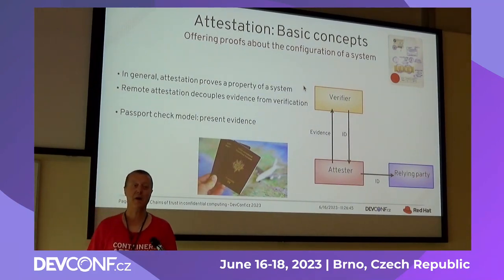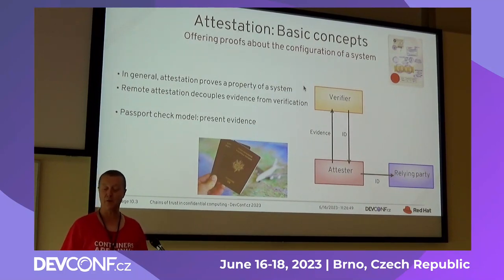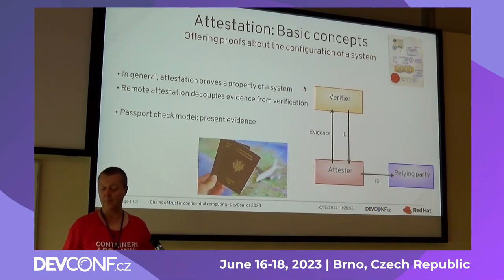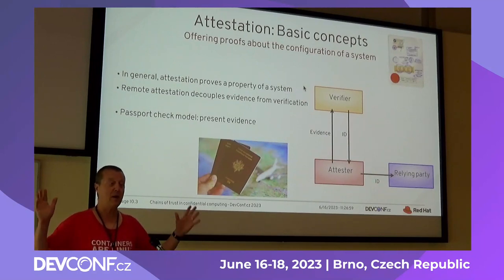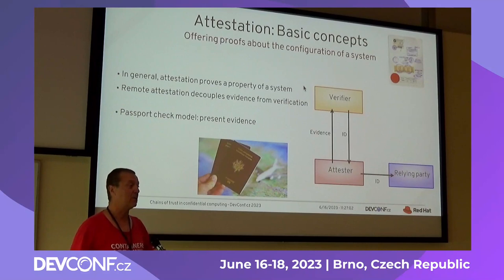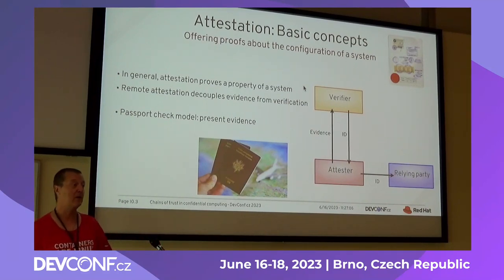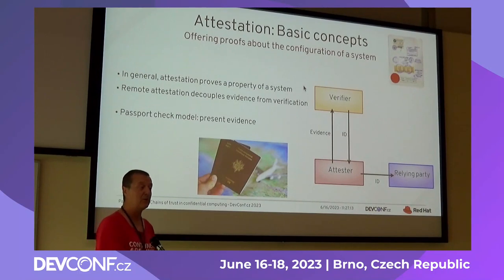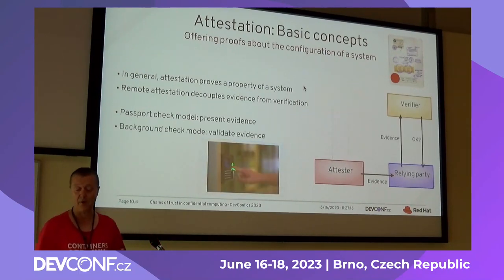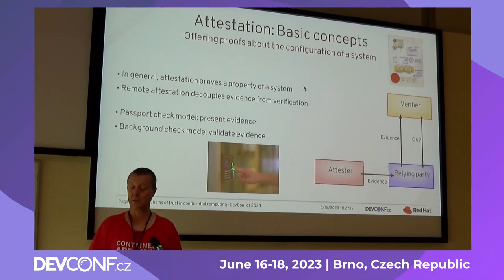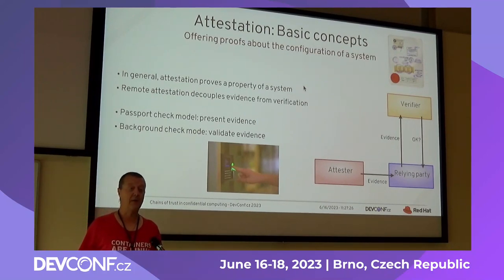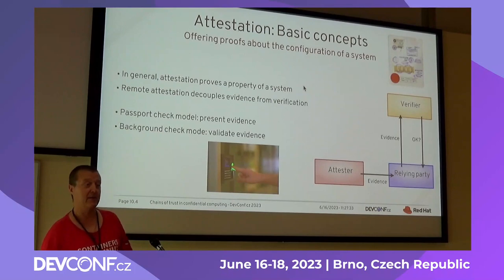There are two big models for verifying evidence. The first is the passport check model: the attester sends its evidence — who am I, etc. — to the verifier; the verifier issues some kind of ID; and you present this ID to the relying party. In a cloud context, that would be some internal secret you present each time you want to use a cloud API. Another model is the background check model, where you present the evidence directly to the relying party, and the relying party presents a version of this evidence to the verifier, which says whether this entity can go through.